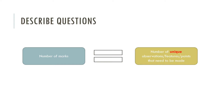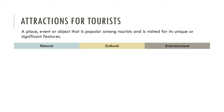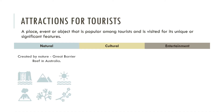All of these are describe questions, and the number of marks refers to the number of unique observations or features that need to be made about the resource. Most tourism questions center around attractions for tourists — a tourist attraction is generally defined as a place, event, or object that is popular among tourists and visited for its unique or significant features.